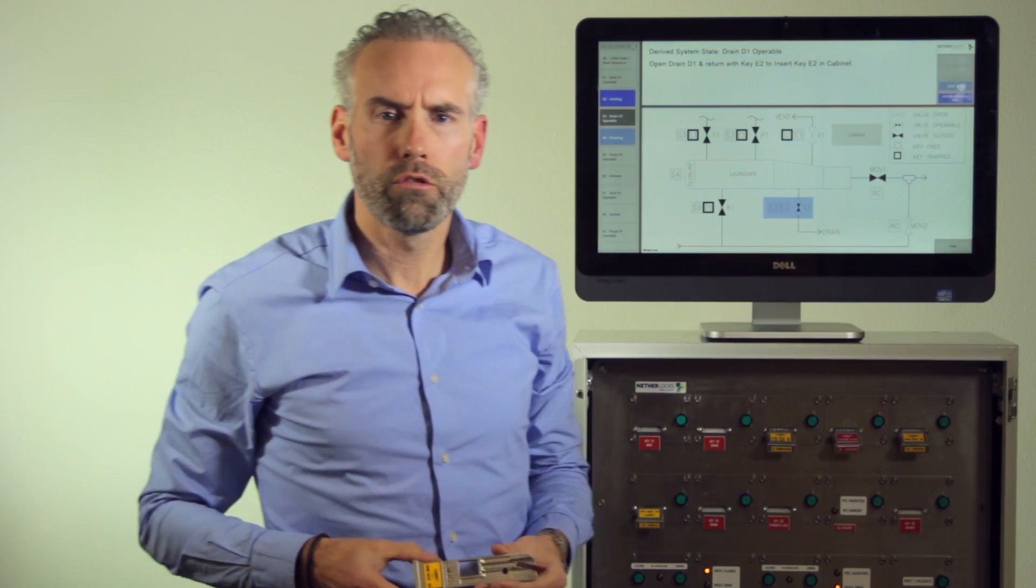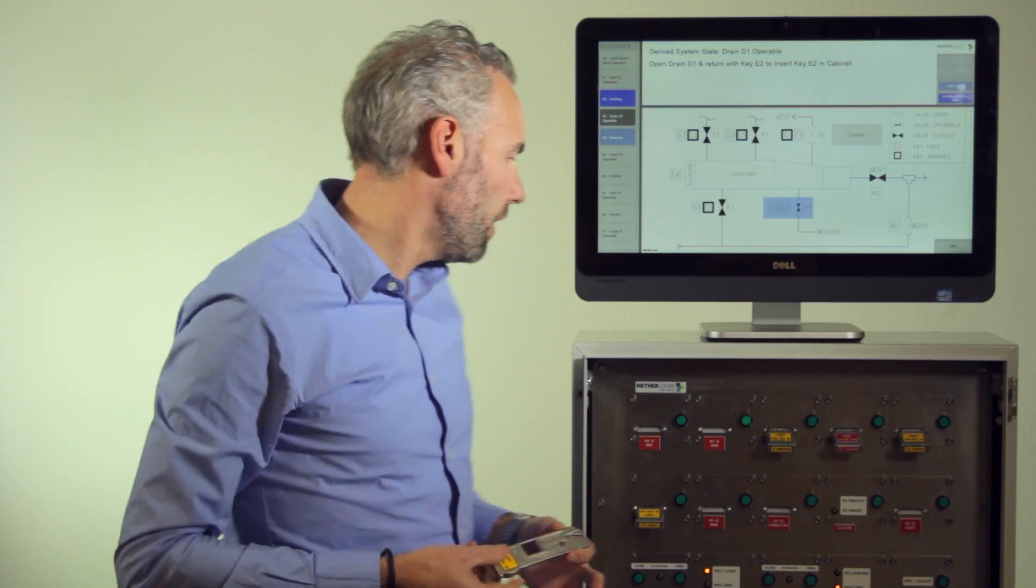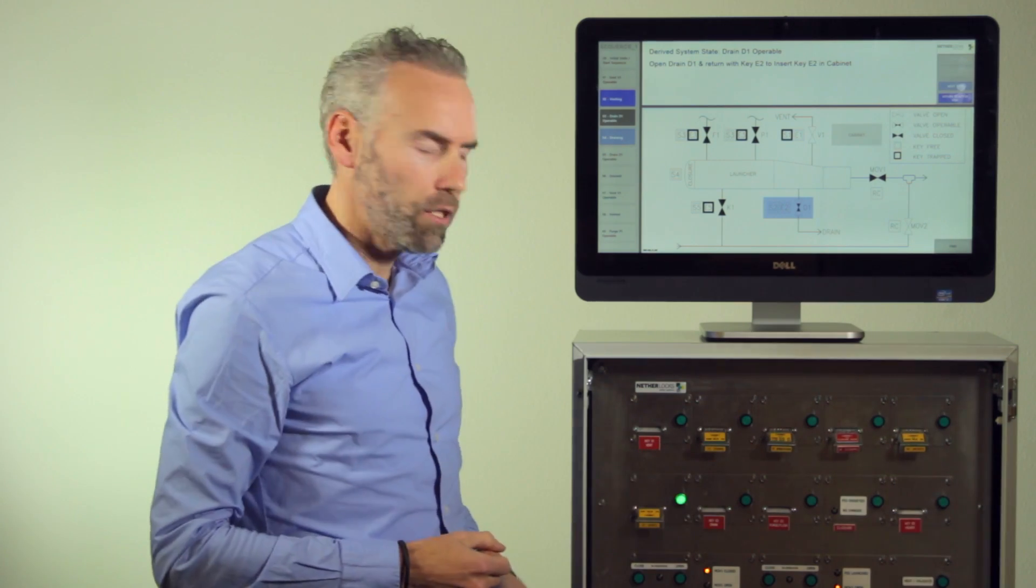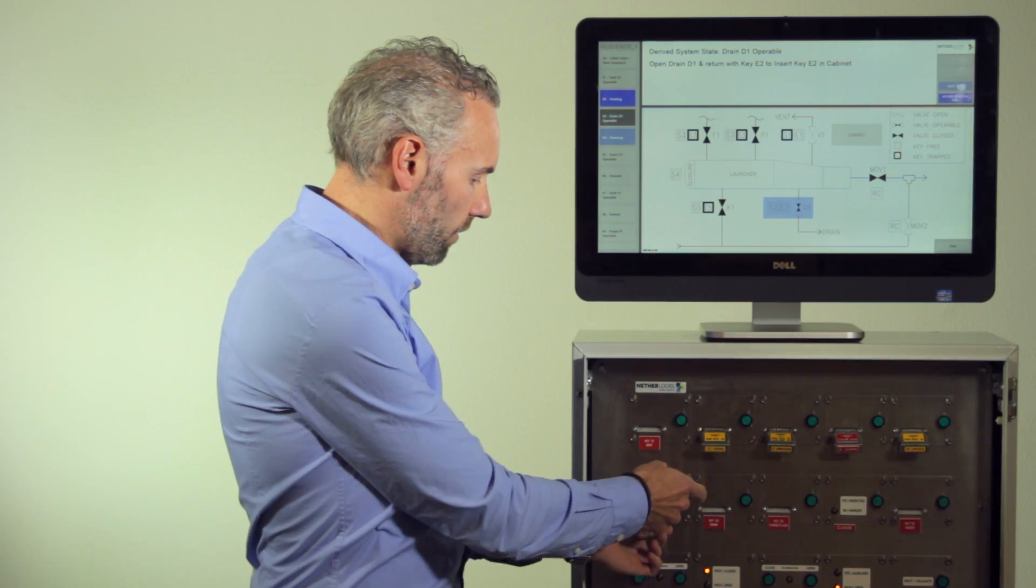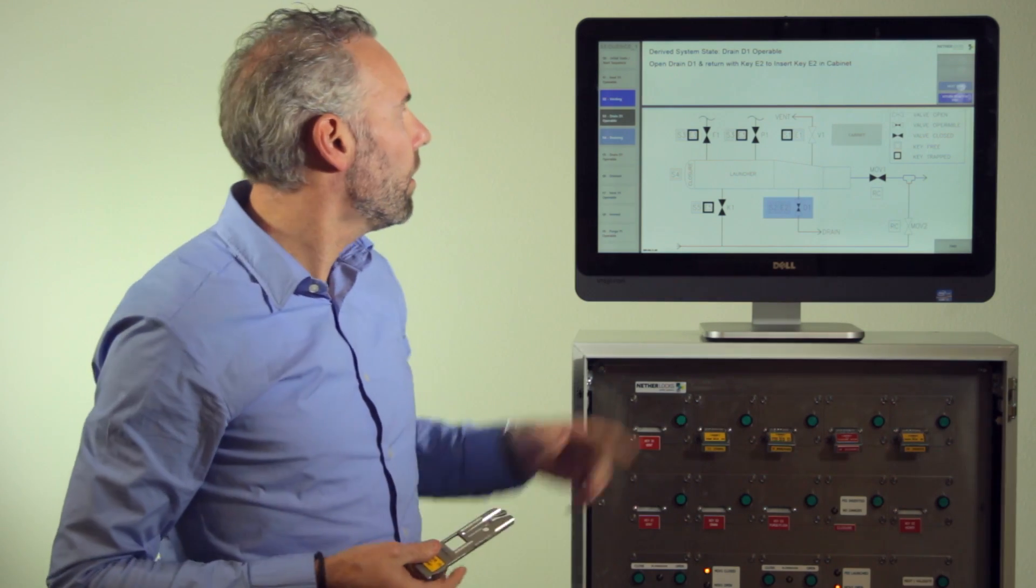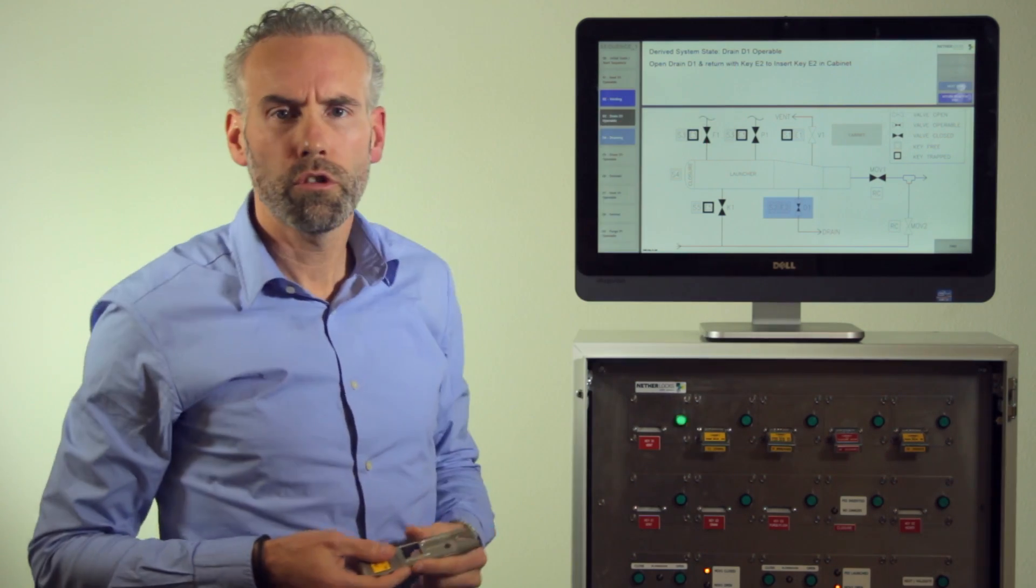I have now closed the drain valve and come back with the key and inserted it into the designated position in the cabinet. The LED indicates I now have to take the key E1 and I have to close the vent valve.